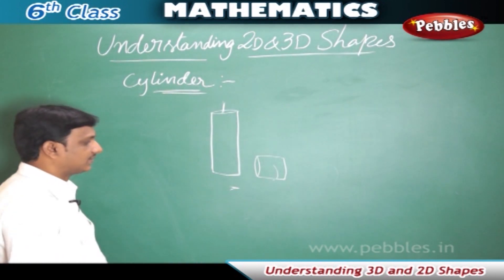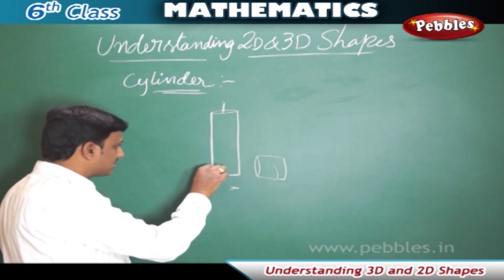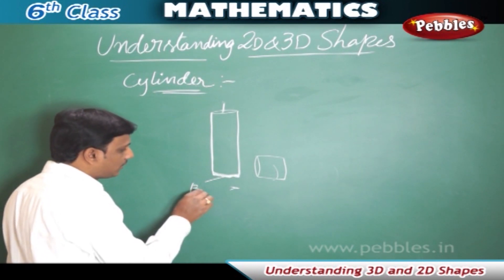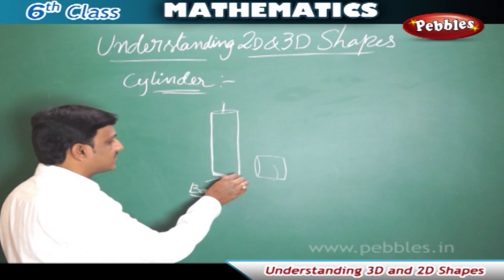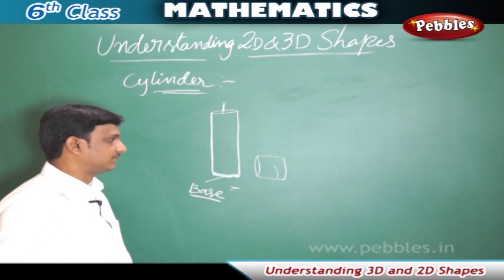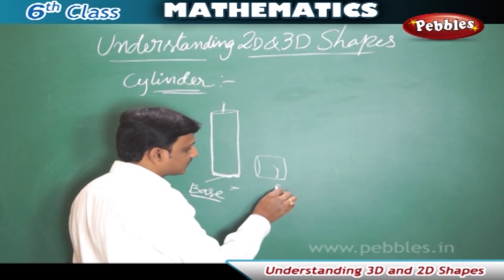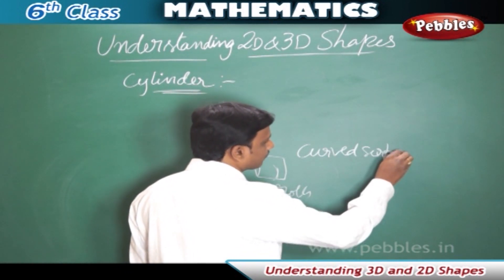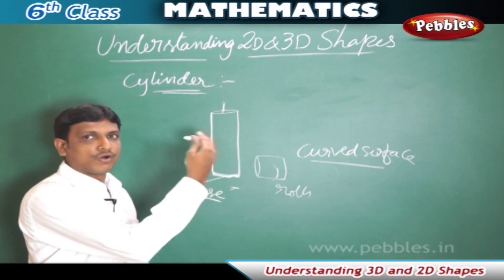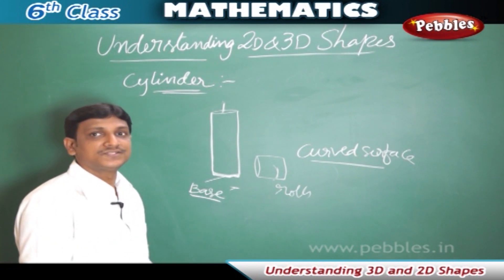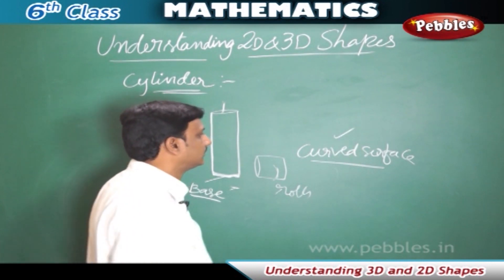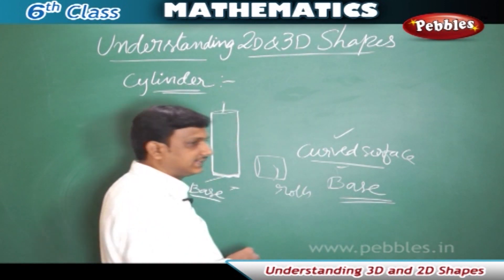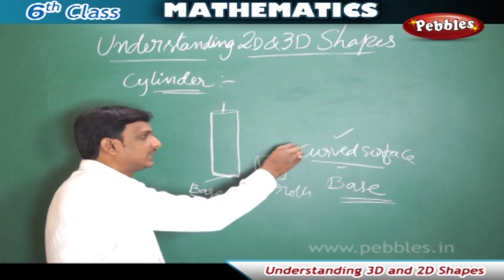Let us observe this candle. If we keep the candle in a horizontal position, the surface on which it stands is called the base. The base is the surface that lets the candle stand upright. The surface on which the candle rolls when laid horizontally is called the curved surface. So cylindrical objects have a curved surface and a base — they stand on the base and roll on the curved surface.